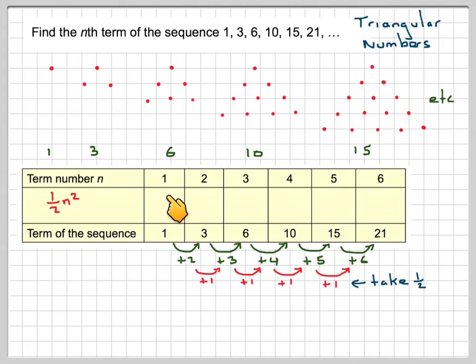So when n is 1, it's 1 squared, which is 1, times a half, which is a half. 2 squared is 4, divided by 2, which is 2. 3 squared is 9, 9 divided by 2 is 4.5.